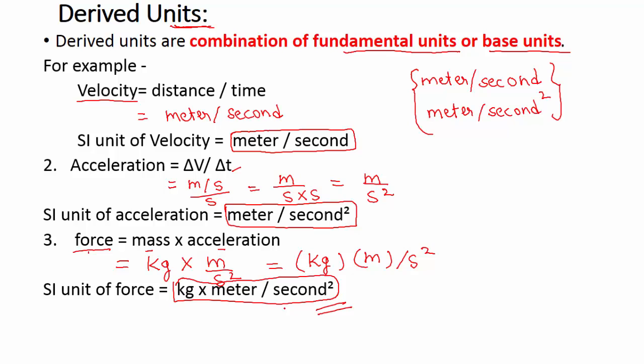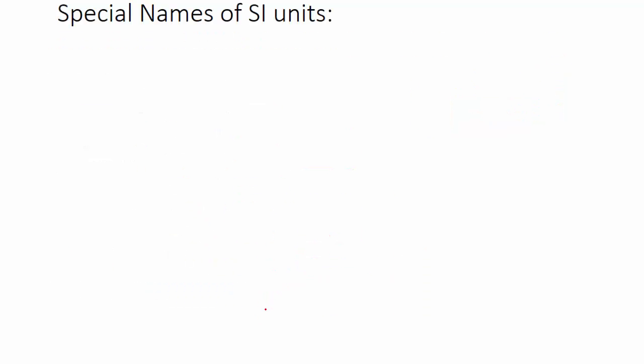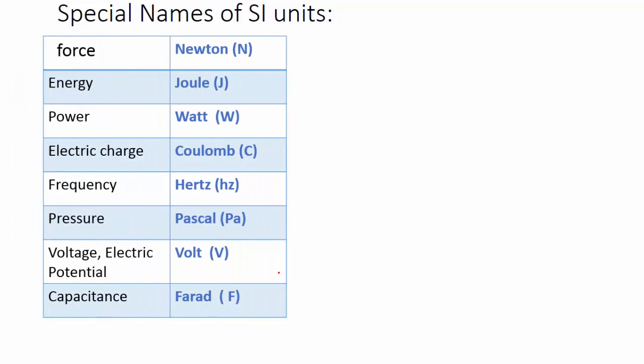There are few units which have special names instead of writing them in fundamental units. Like force, we don't write kilogram meter per second square. Instead everywhere you will see newtons as a unit of force. The same way actual derived unit of energy is kilogram meter square per second square, but we generally use special name for energy, that is joule.